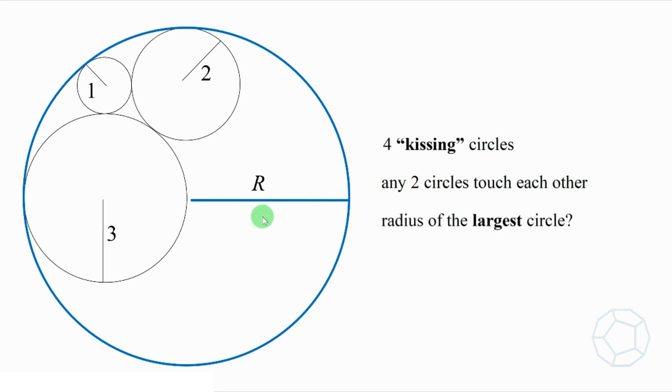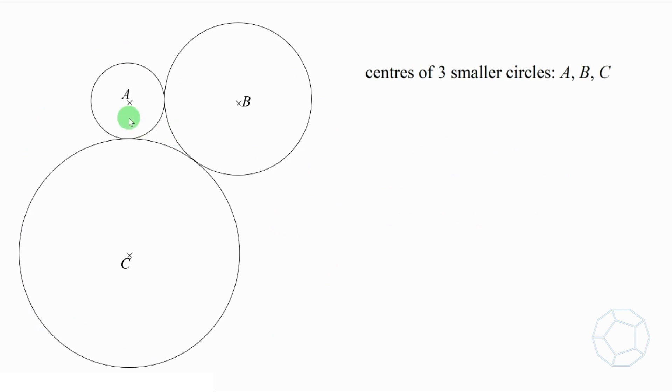To start with, we denote the centers of the three circles by A, B, and C. For the points of contact, we call them D, E, and F. Is there any relation between these six points? Let's check it out.